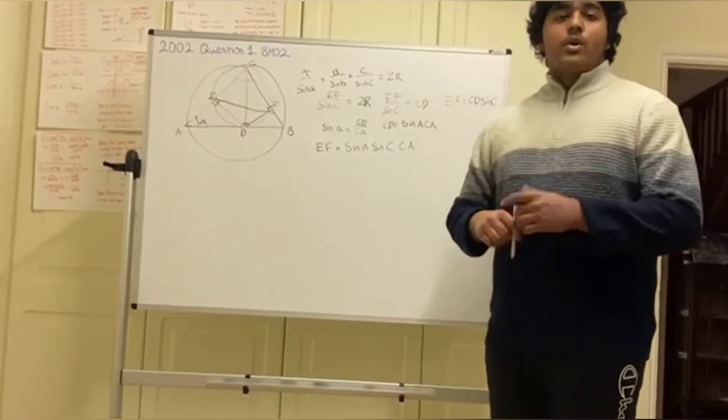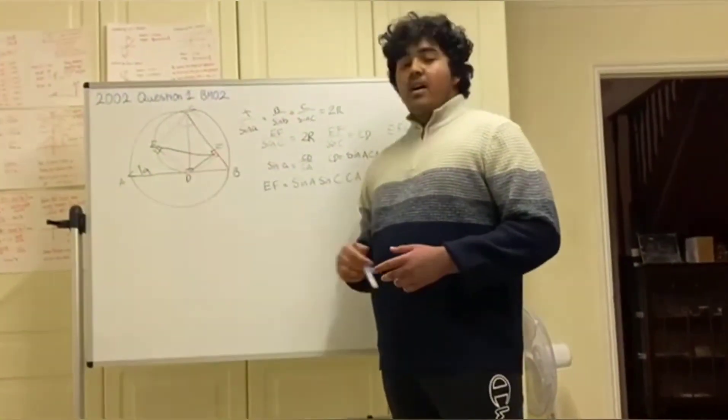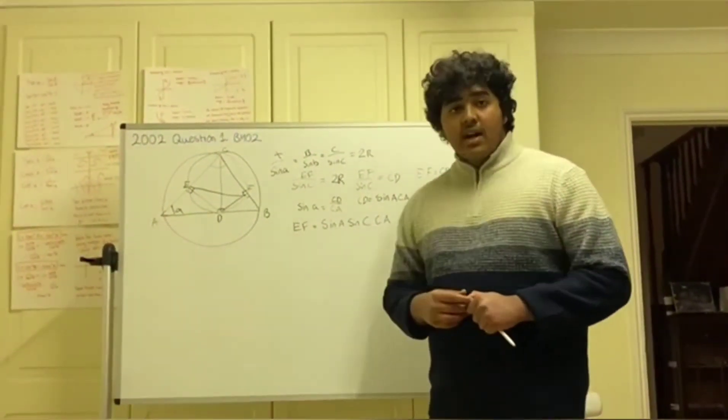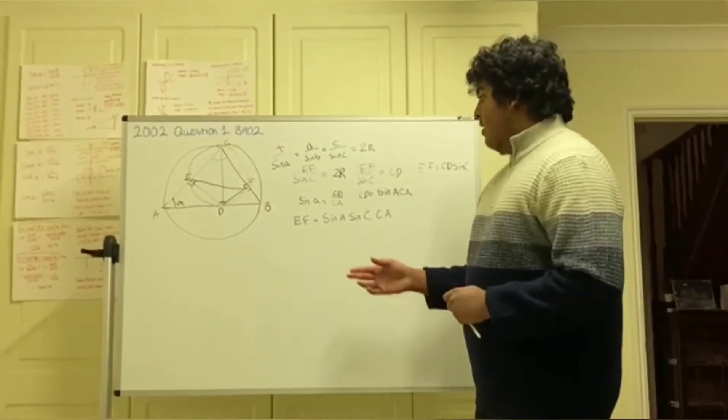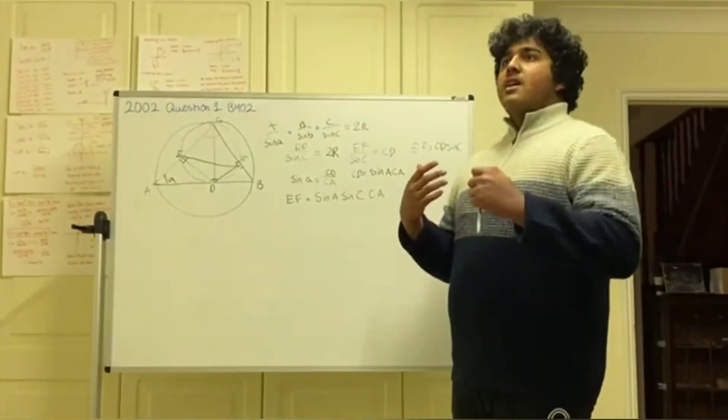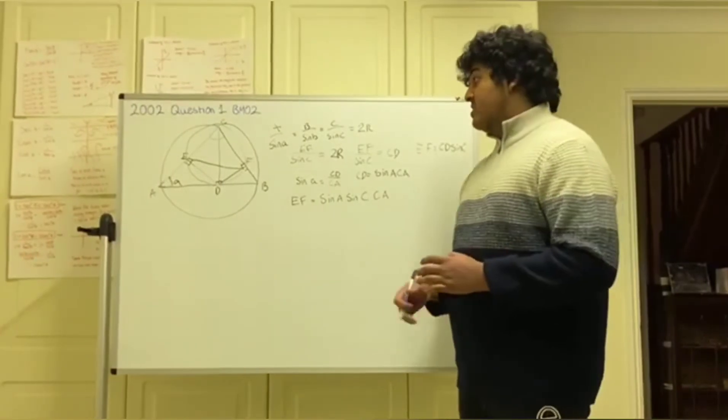But obviously, we're not done because CA is still a line which can vary depending on which vertex is brought down. So we haven't reached a solution. Obviously, we can see we're forming some kind of pattern here. We've got sin A, sin C. So the only sensible thing to think of next would be sin B.